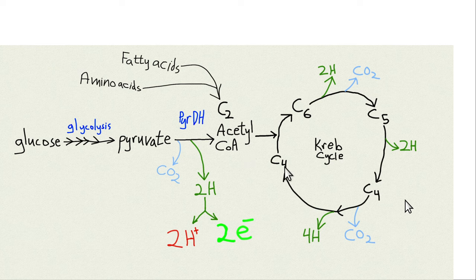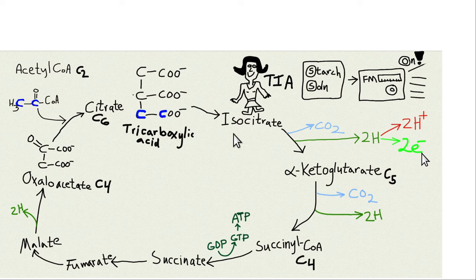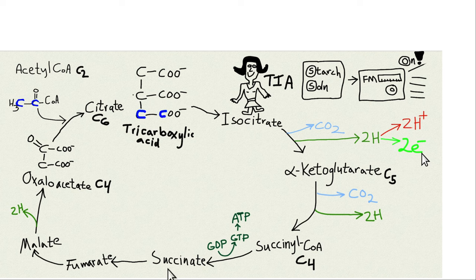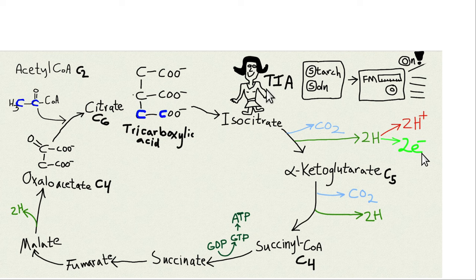Acetyl-CoA combines with oxaloacetate, a four-carbon molecule, to make the six-carbon citrate — the tricarboxylic acid molecule — and then the rest is Krebs cycle. To memorize the substrates, I use a mnemonic: TIA means 'ant' in Spanish — tricarboxylic acid (citrate), isocitrate, and alpha-ketoglutarate. Then McDougal's Start Solution gives SS — succinyl-CoA and succinate. Then FM like an FM radio — fumarate and malate. And O is for oxaloacetate, which combines with acetyl-CoA to make citrate again, completing the cycle.